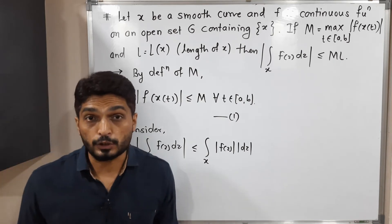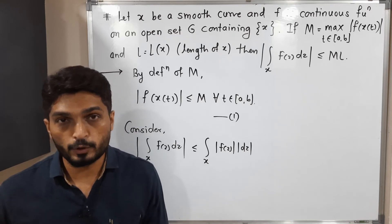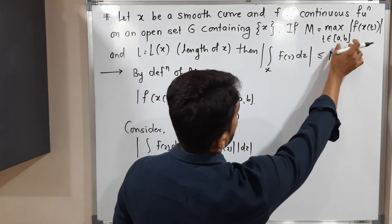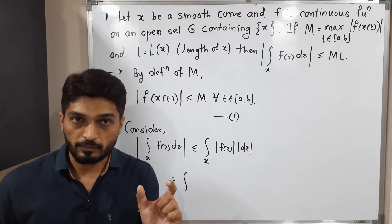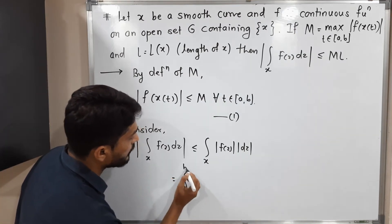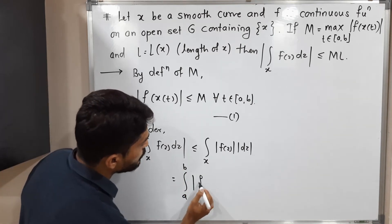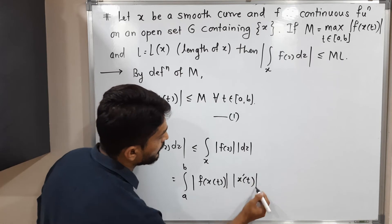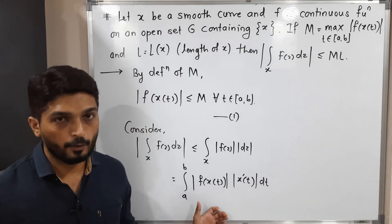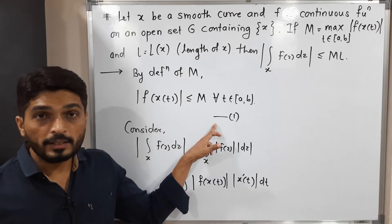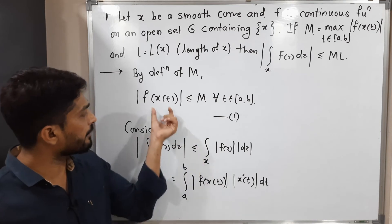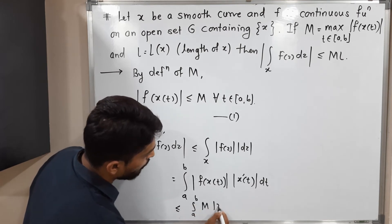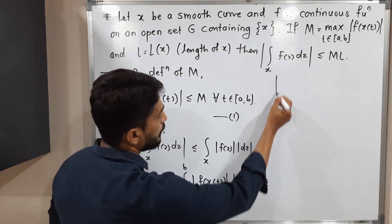Using the definition of the complex line integral, with t belonging to the closed interval [a, b], we write the integration from a to b of mod f of x of t into x dash of t. Applying the mod, this is less than or equal to m by inequality number one, so we get integration from a to b of m times mod x dash of t dt.